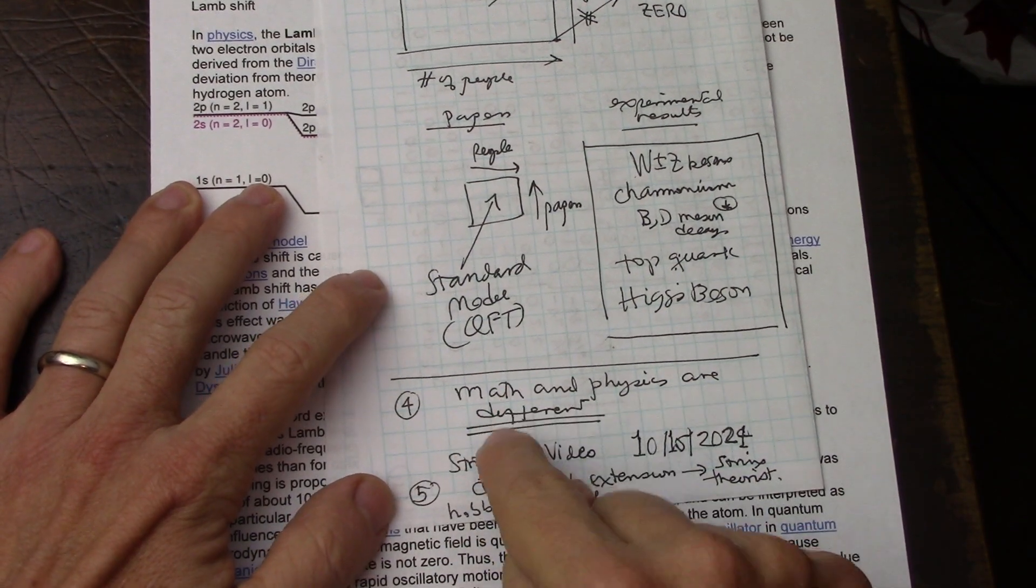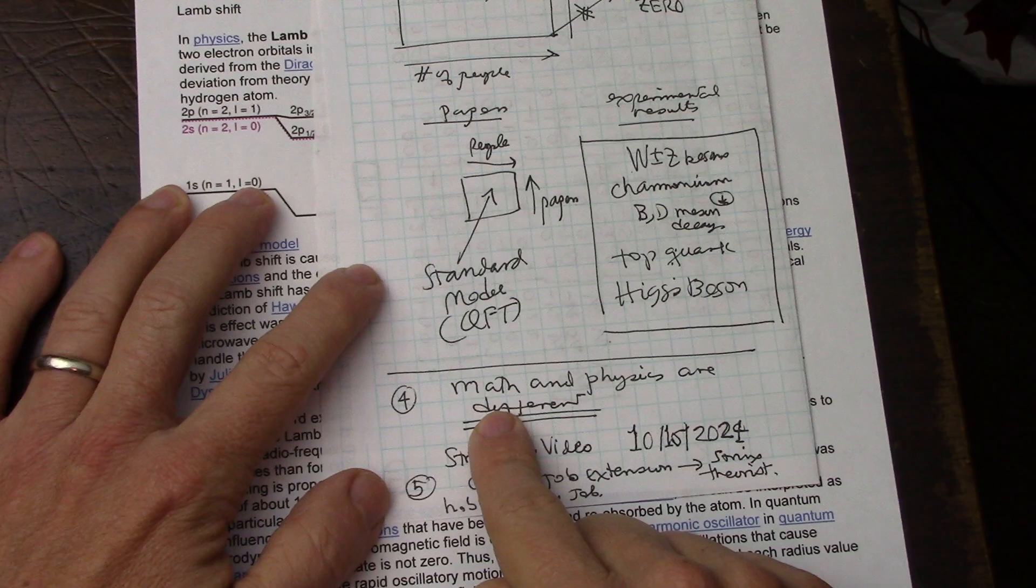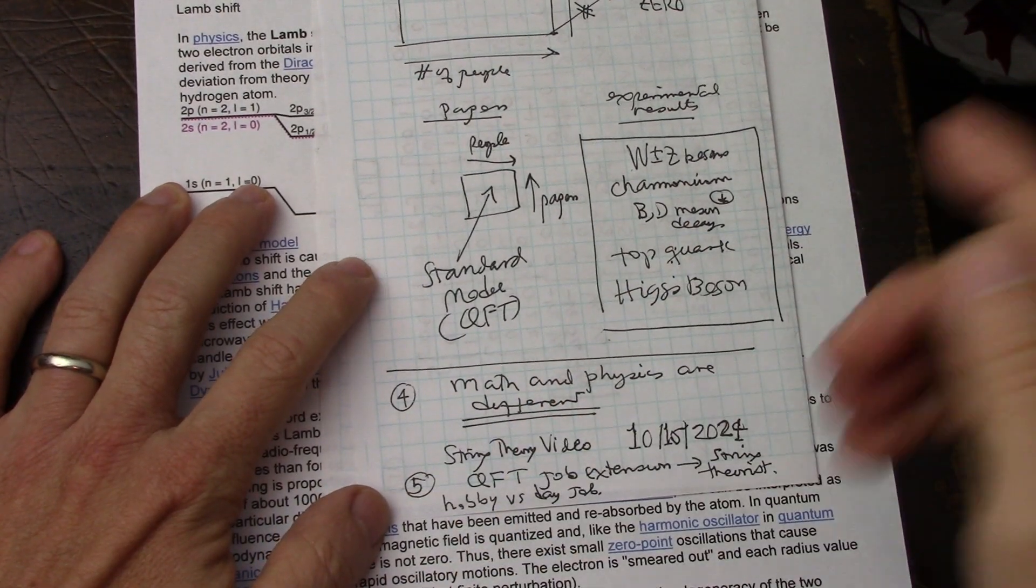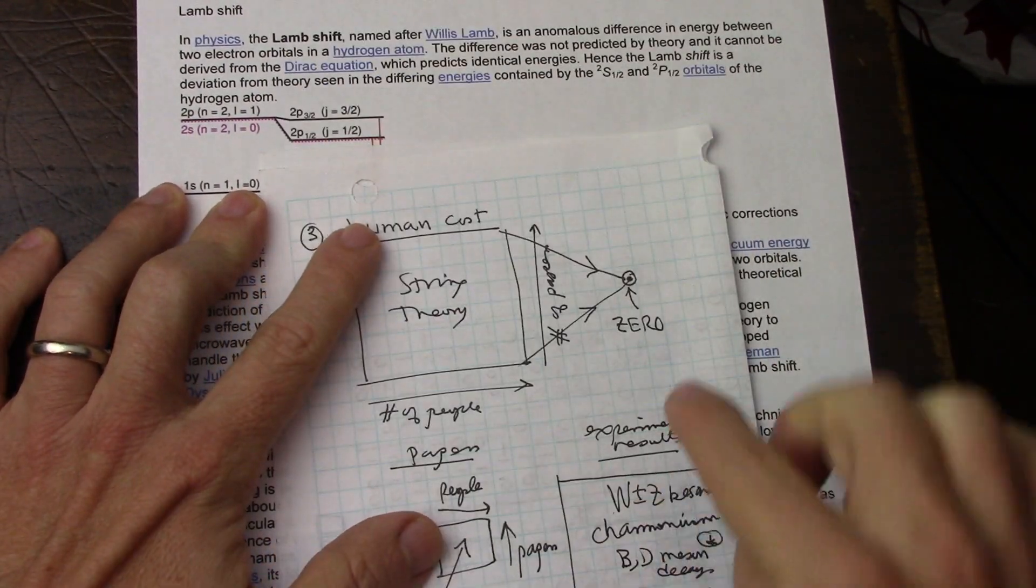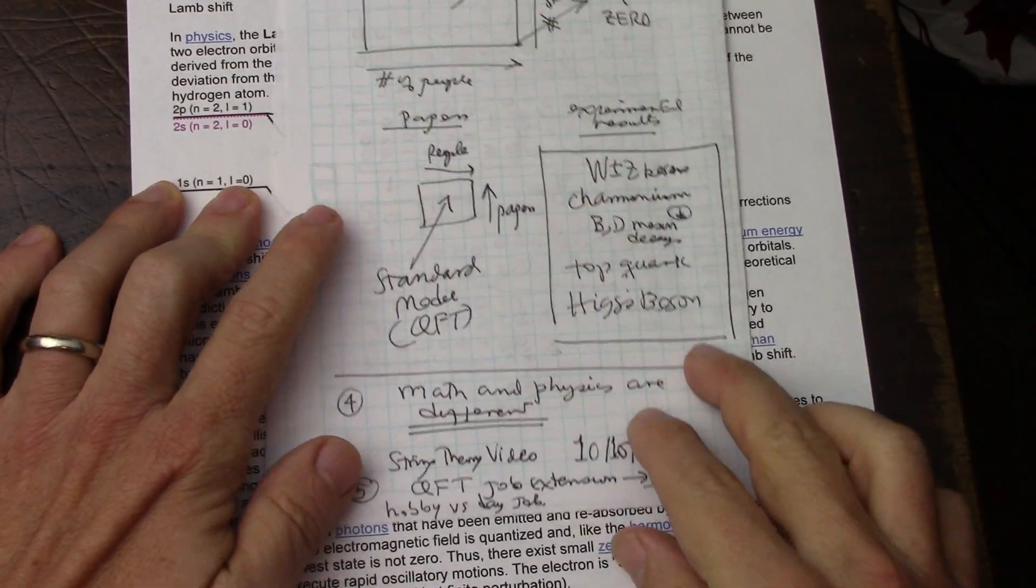Whereas, in the case of math, math is very lucky. You can have the monster group and the monster group is what it is. And there it is. And somebody proved that it exists and you're done. So math, I think, is a little luckier than physics. Physics is based on experimental verification. It just is. That's just the way the field is.